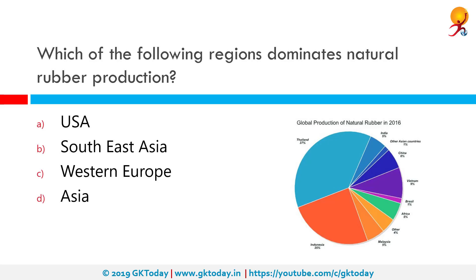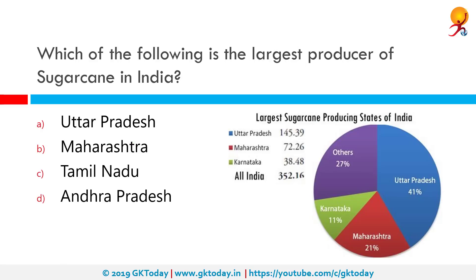Which of the following regions dominates natural rubber production? The correct answer is Southeast Asia. As you can see on the pie chart, Thailand and Indonesia, which are also in Southeast Asia, dominate the pie chart, which means the maximum rubber production happens in Southeast Asia.